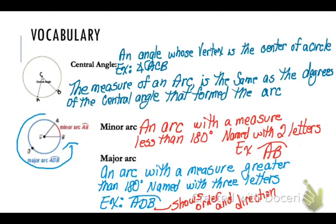Now a major arc, the order of the letters shows the direction the arc goes. So we start with our A, then we start traveling around our circle until we hit D and then we hit B. So it tells us order and direction.